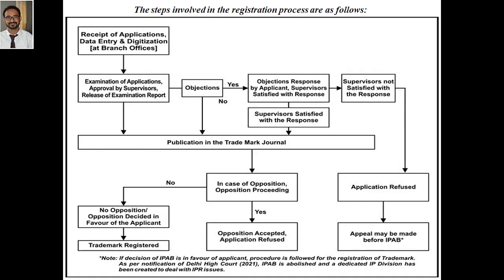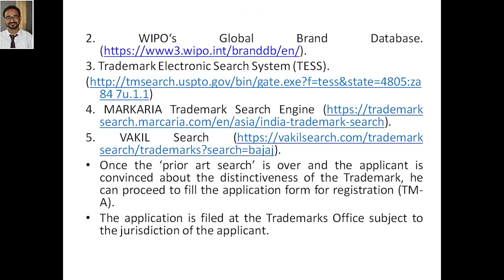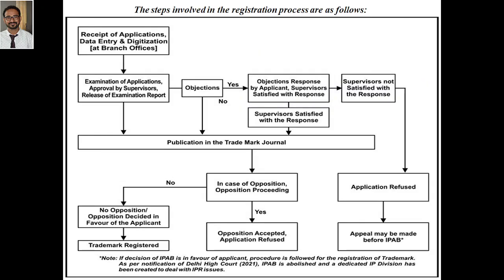These are some of the steps. Regarding jurisdiction, every application has territorial jurisdiction, as we have discussed for patents and copyrights — the same applies for trademarks. Now, the steps involved in the registration process are as follows: first is receipt of application.